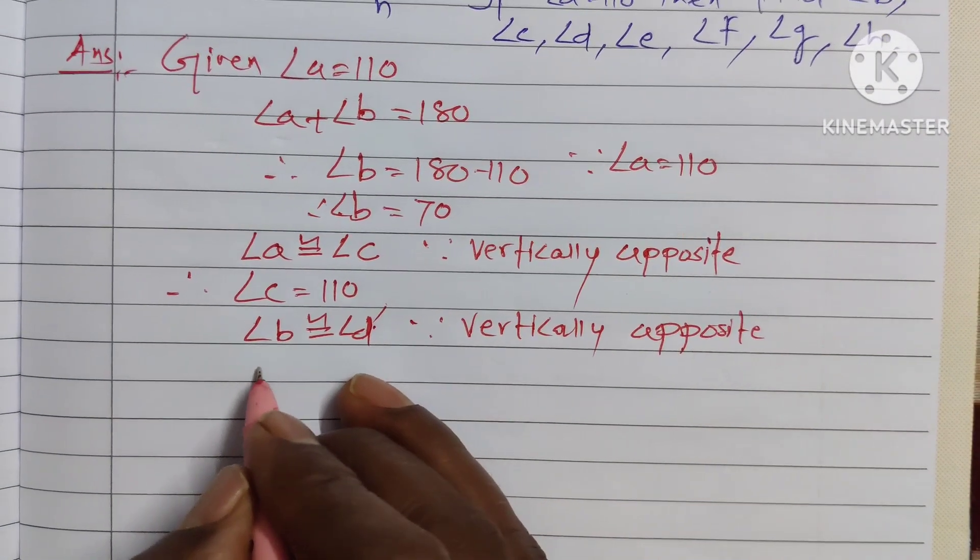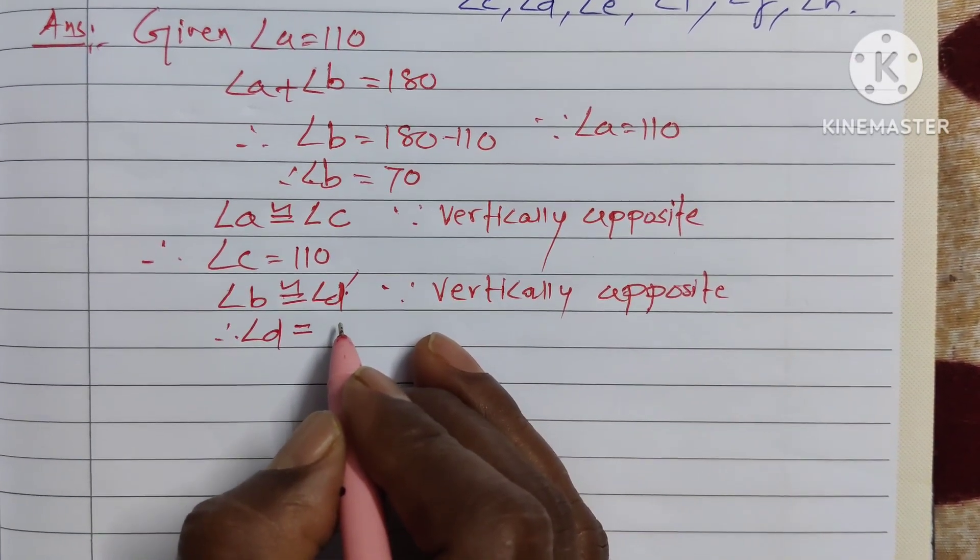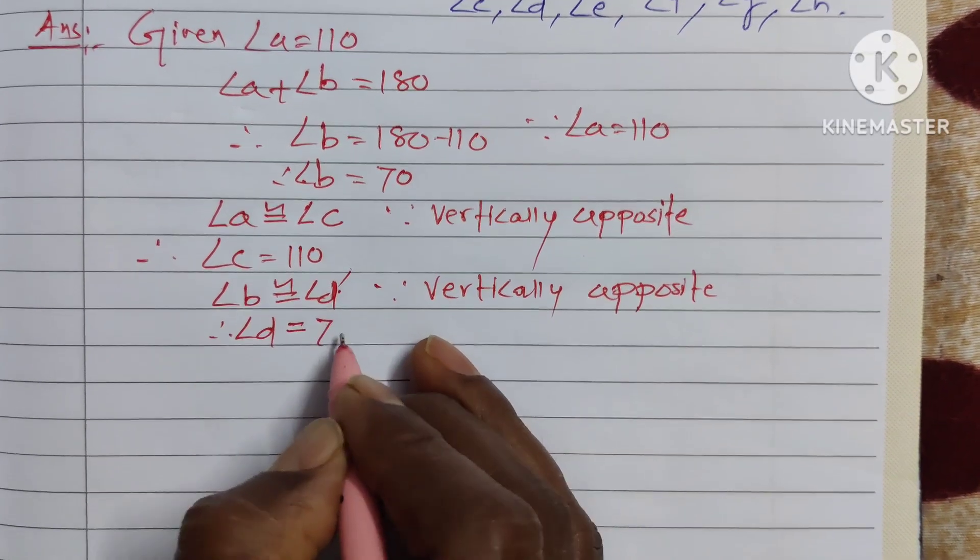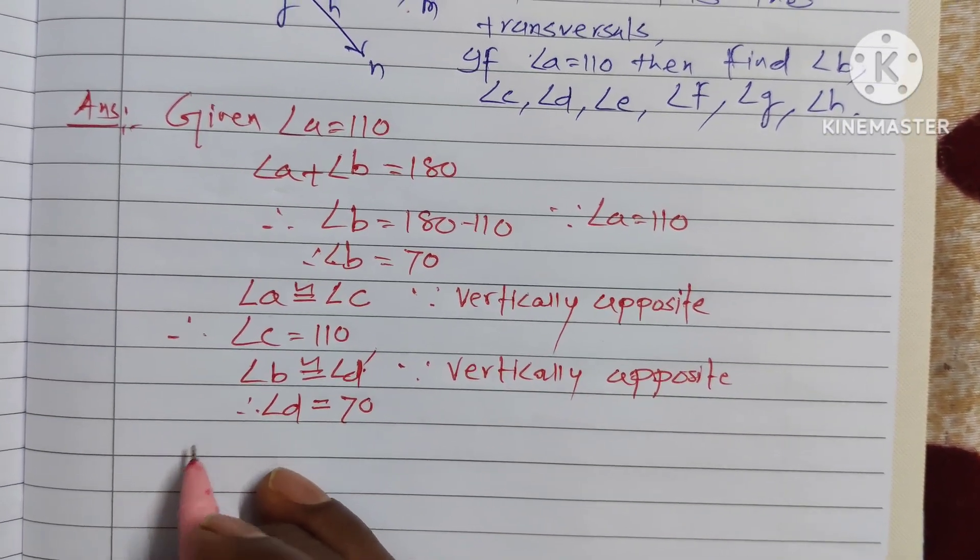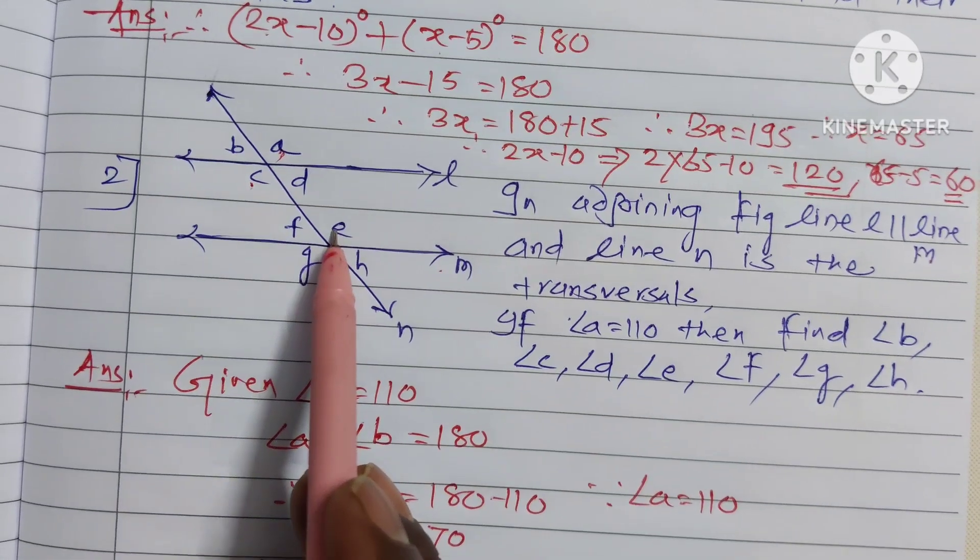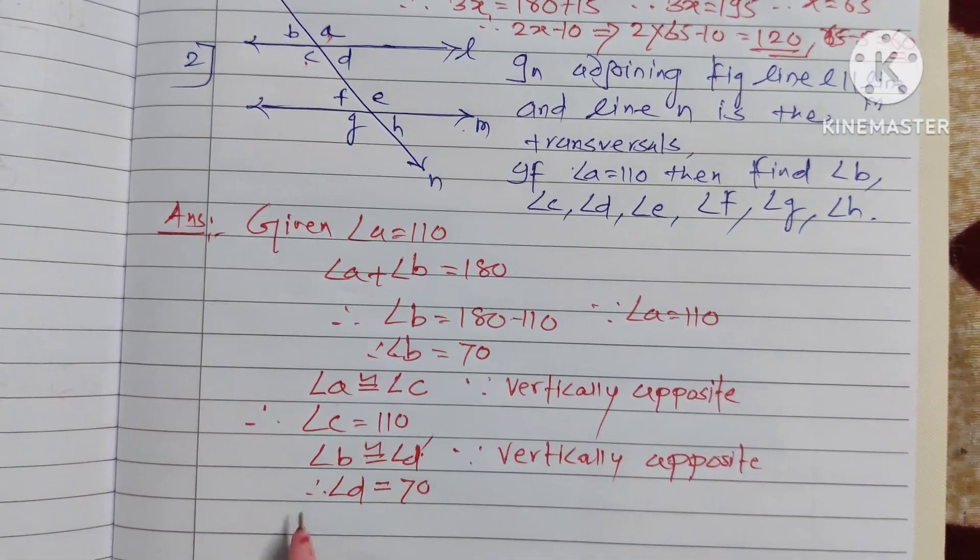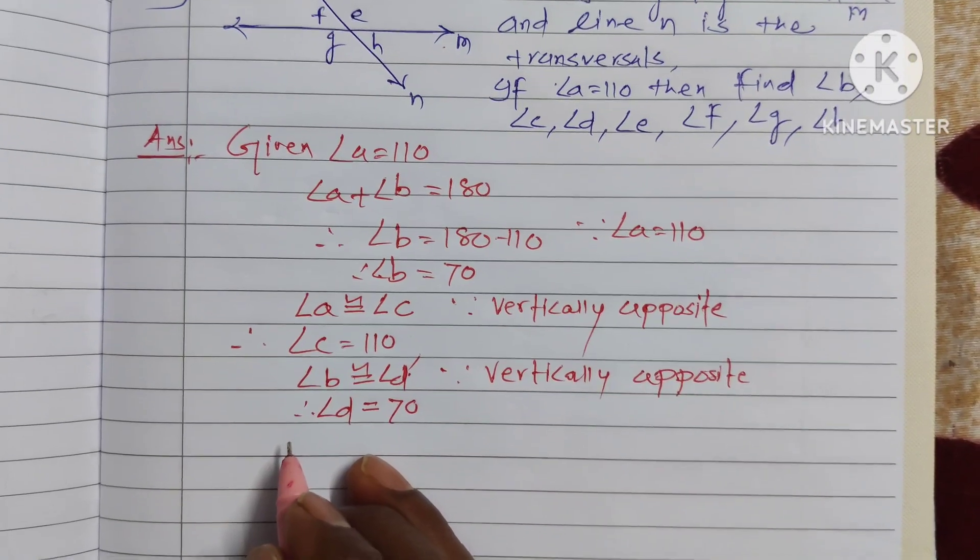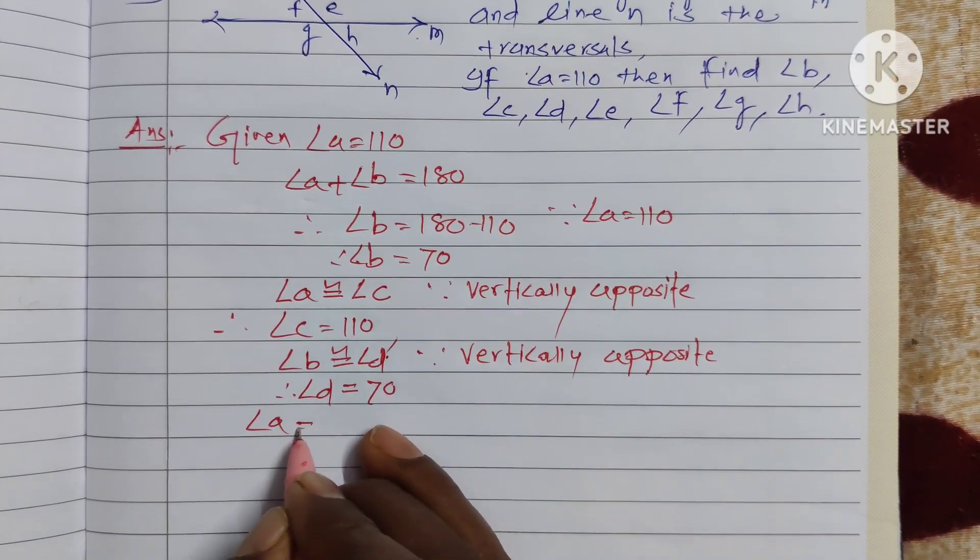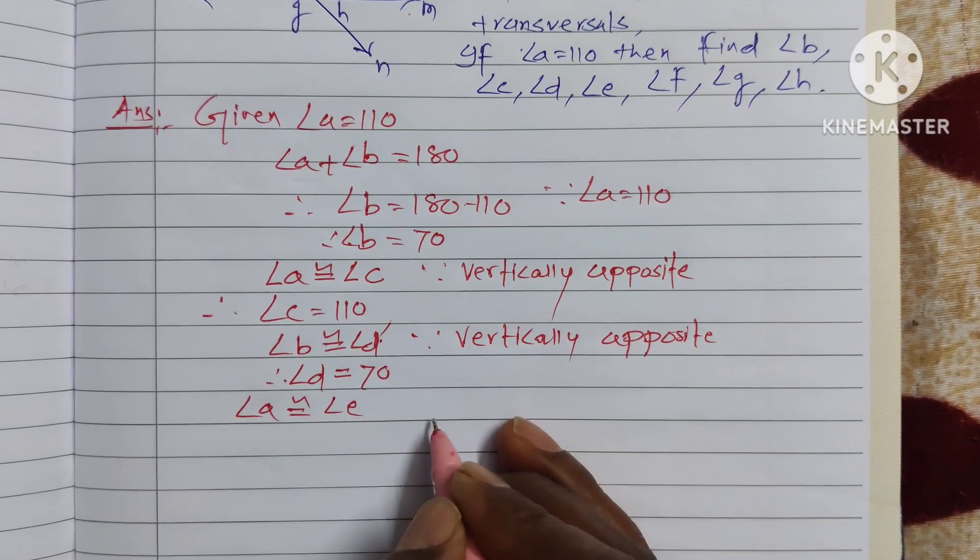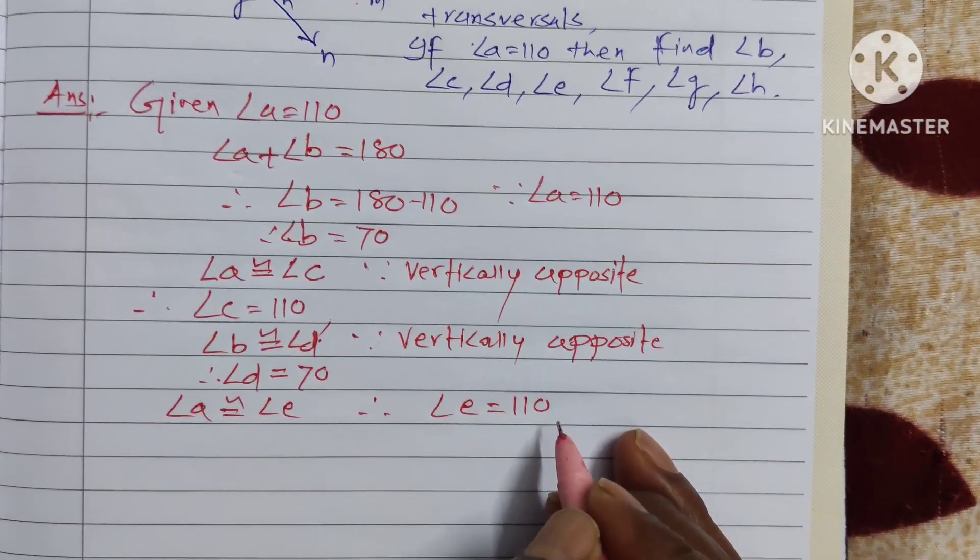Therefore angle d is equal to 70. Now find out angle e. We know that angle a and angle e are corresponding angles, and corresponding angles must be congruent. Therefore angle e is equal to 110.